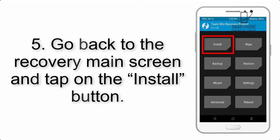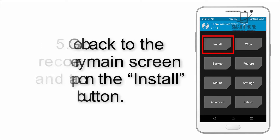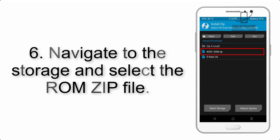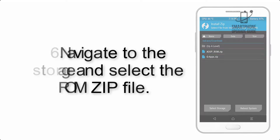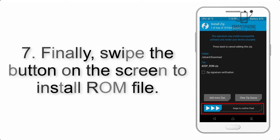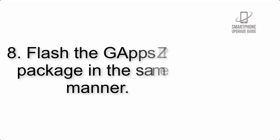Step 5: Go back to the recovery main screen and tap on the Install button. Step 6: Navigate to the storage and select the ROM zip file. Step 7: Finally, swipe the button on the screen to install the ROM file.